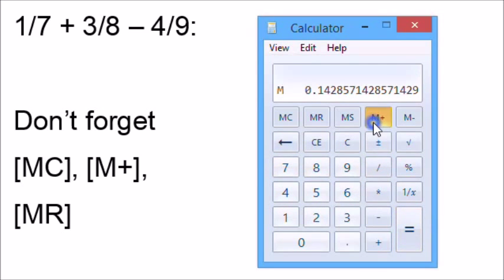We're going to add 3 8ths to it by pressing 3 divided by 8 equals, and plus. Now we're going to subtract 4 9ths by pressing 4 divided by 9 equals, and minus. Press the memory recall button to get the answer of approximately 0.0734127.